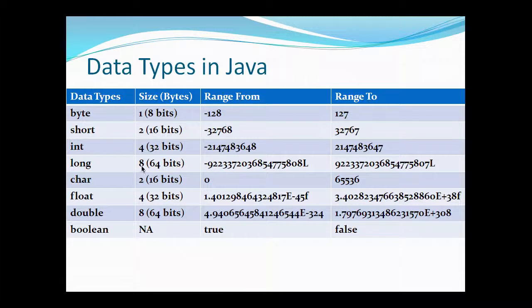If we now move ahead, there are floating point data types which are float and double. The size they hold: float holds 4 bytes or 32 bits, and double holds 8 bytes or 64 bits.